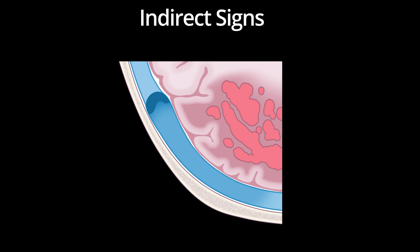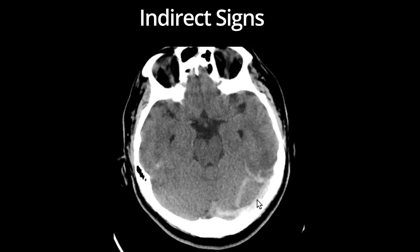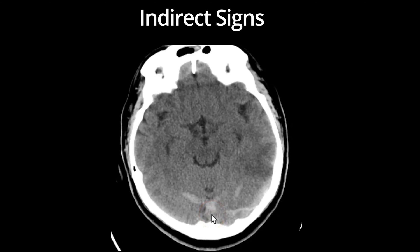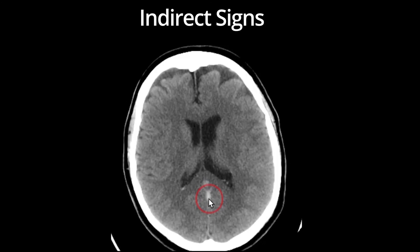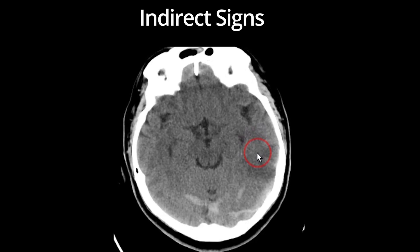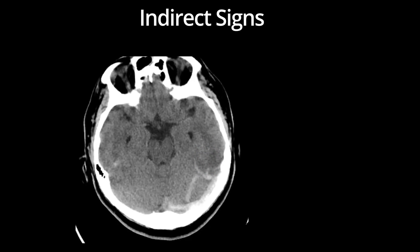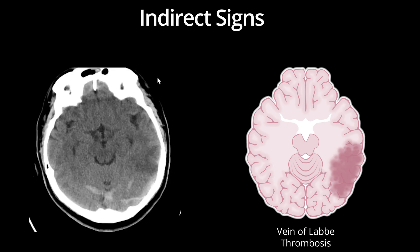In this case, notice the high density in the left transverse sinus. The linear high density extending across the left cerebellum represents a thrombosed draining vein. In addition, there's thrombosis of the straight sinus and the vein of Galen. The hypodensity in the surrounding left posterior temporal region is consistent with edema and possibly developing venous infarct. The edema in this case is characteristic for the location of edema secondary to transverse sinus or vein of Labbé thrombosis.